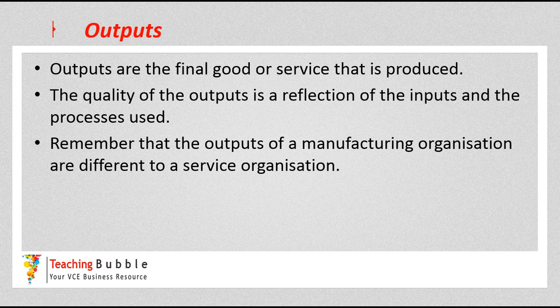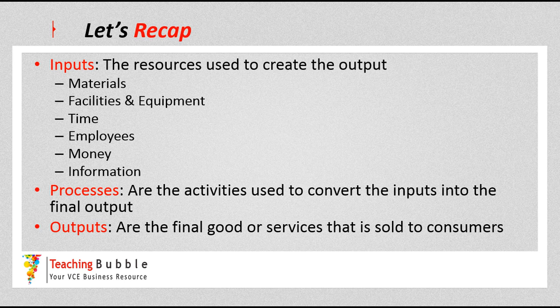So that's the main areas of the operation system. To recap: inputs are the resources used to create the output — we have materials, facilities and equipment, time, employees, money, and information — six main resources. Our processes are all the activities used to convert those inputs into the final output. And outputs are the final good or service that is sold to consumers. That is simply our operations system.